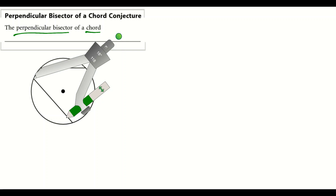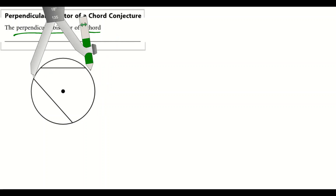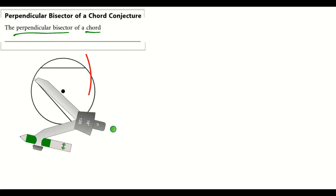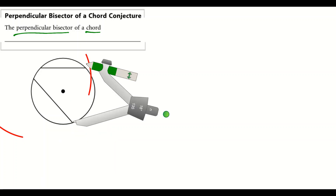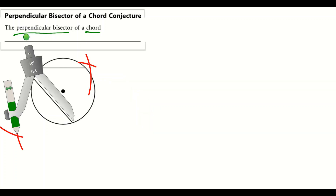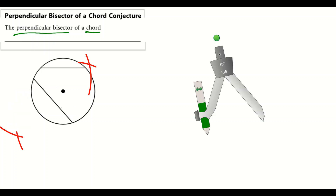Open your compass past halfway. Place the compass point on one end of the chord and mark arcs above and below the line. Then move the compass point to the other end and mark two more arcs — one above and one below — so that they intersect. Then draw a line through those two intersection points.